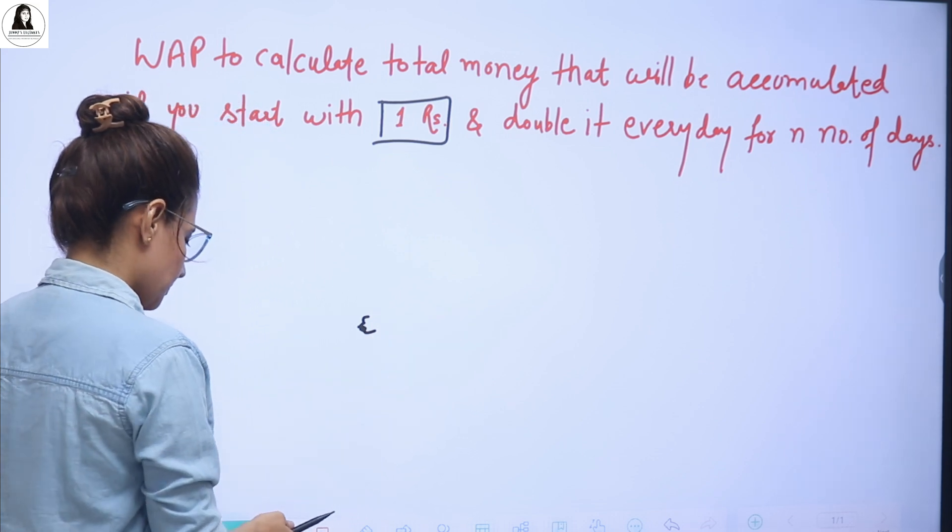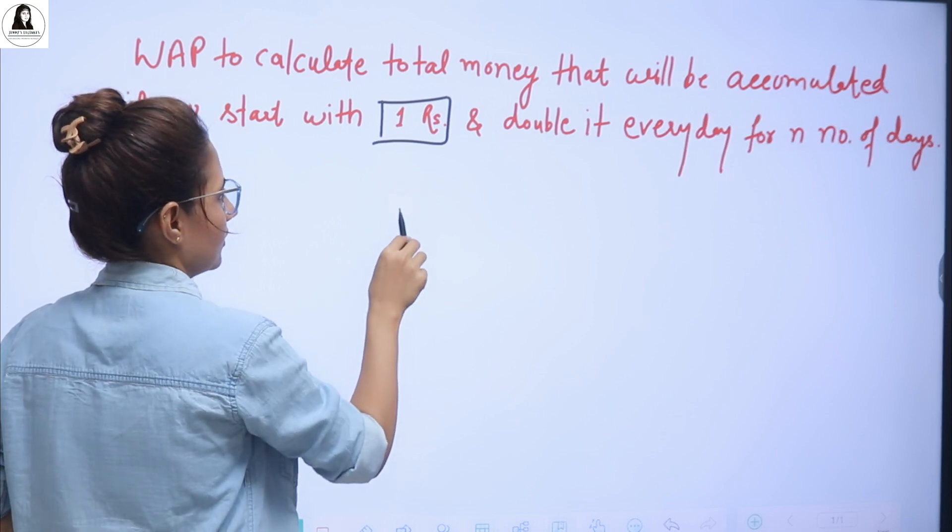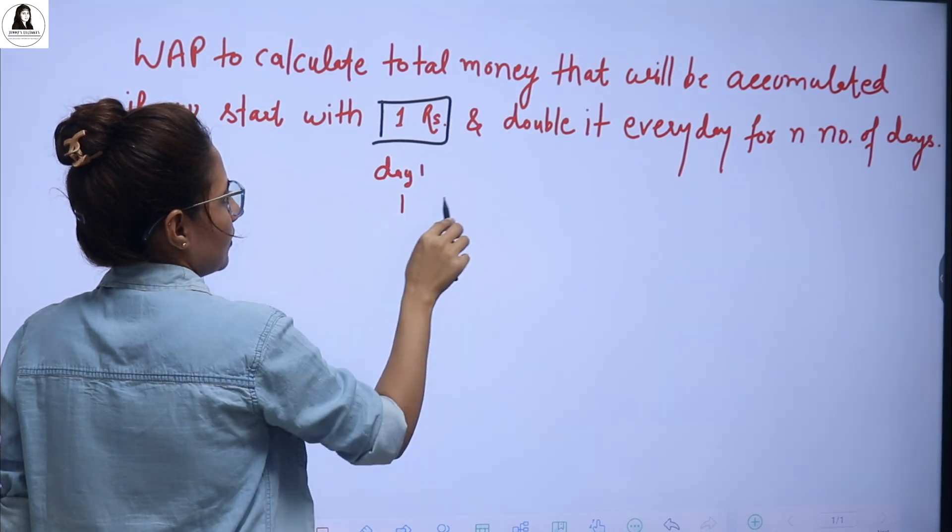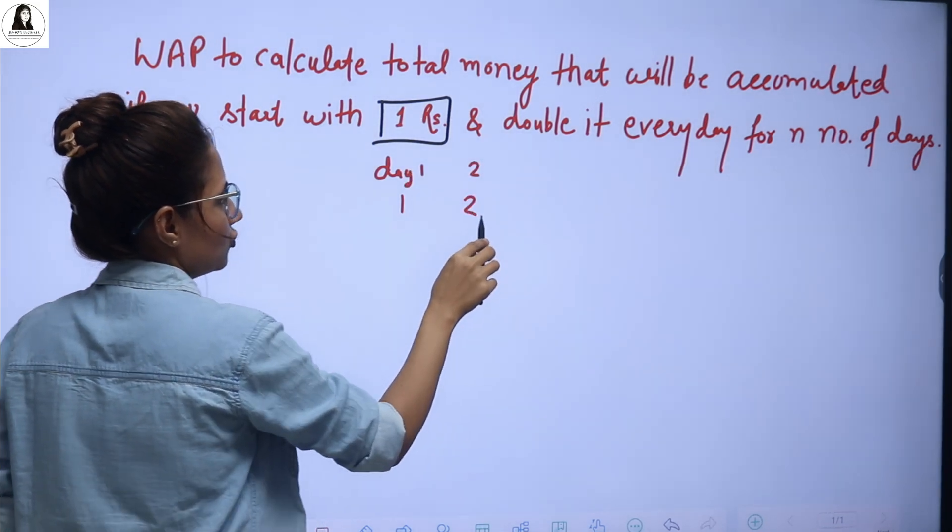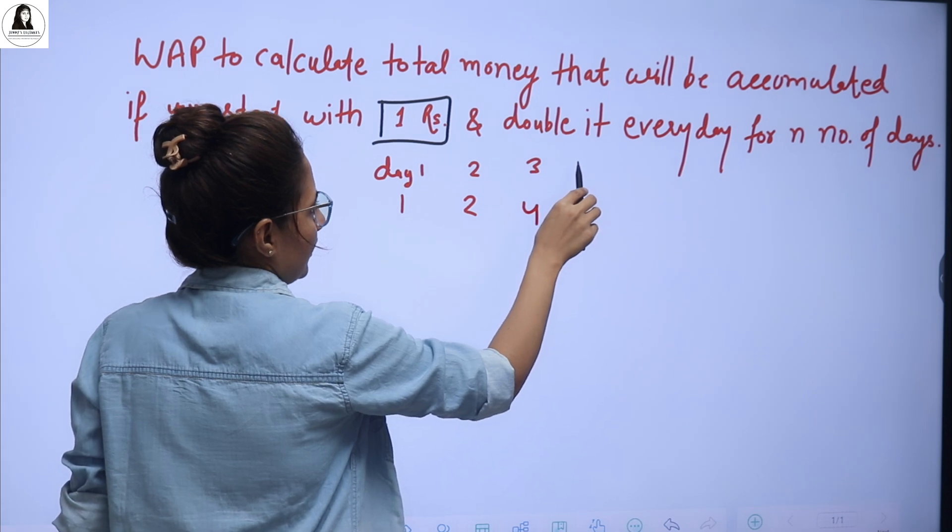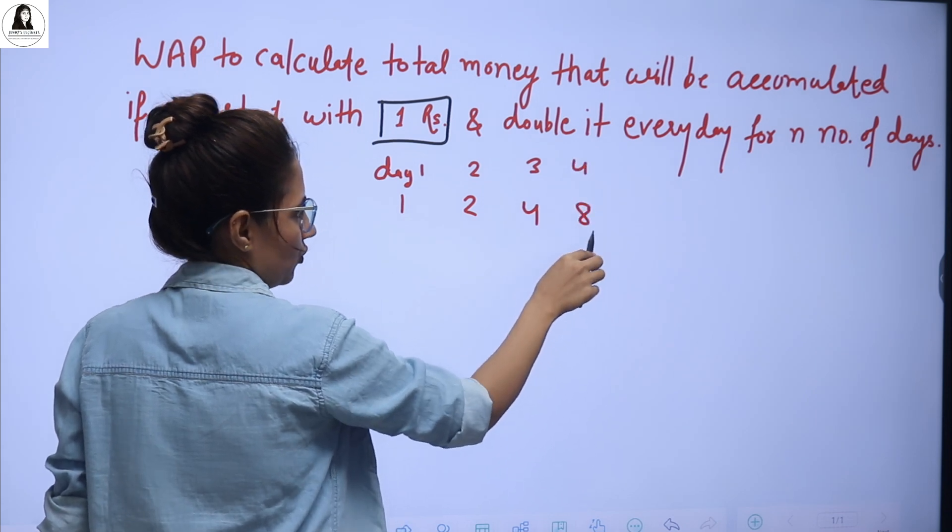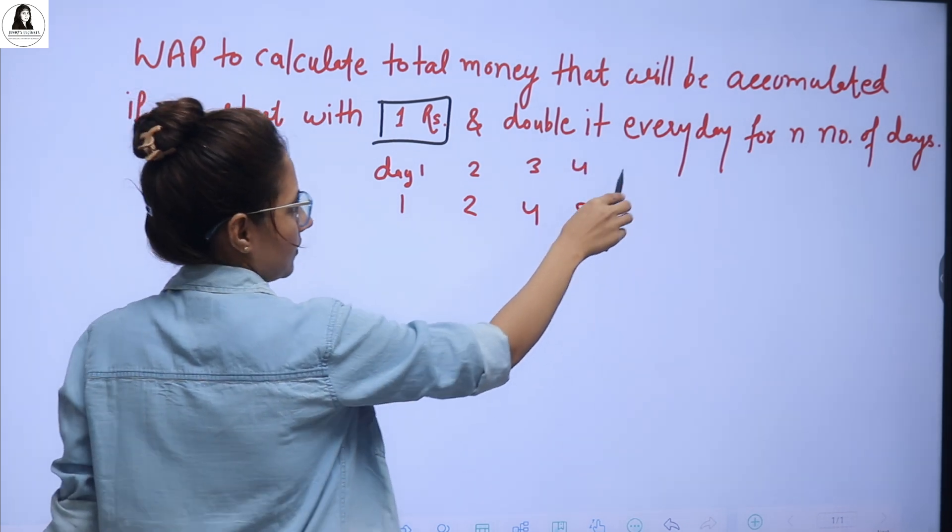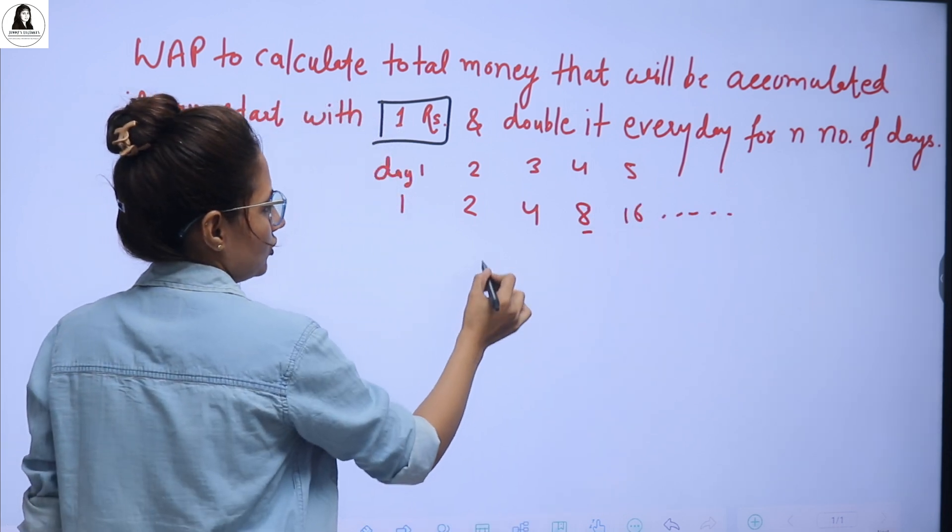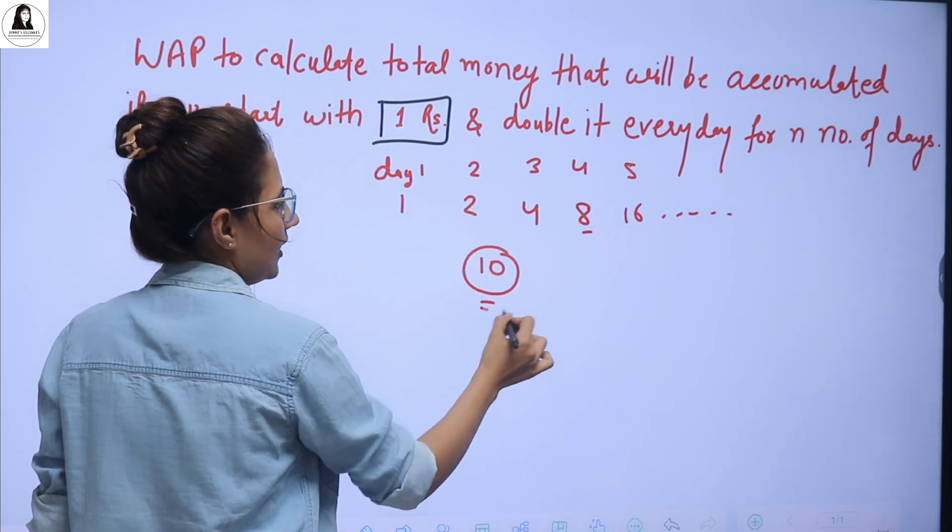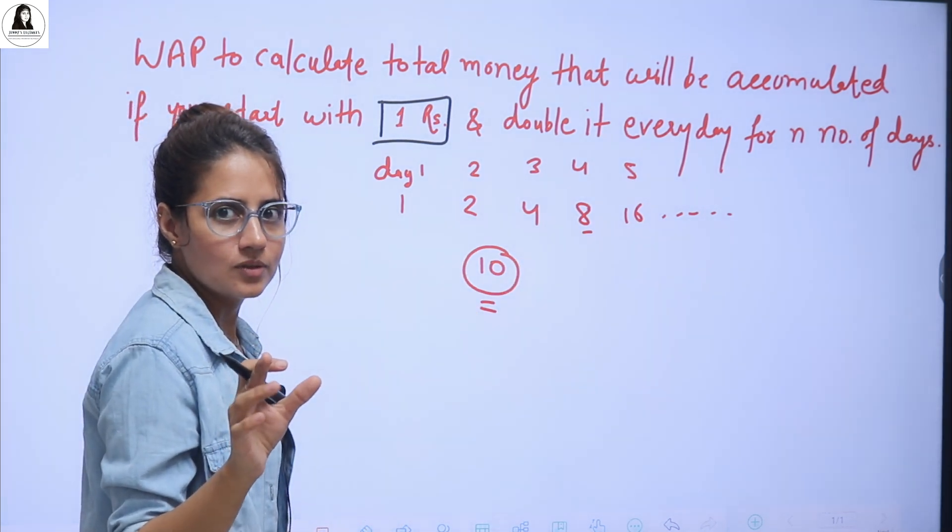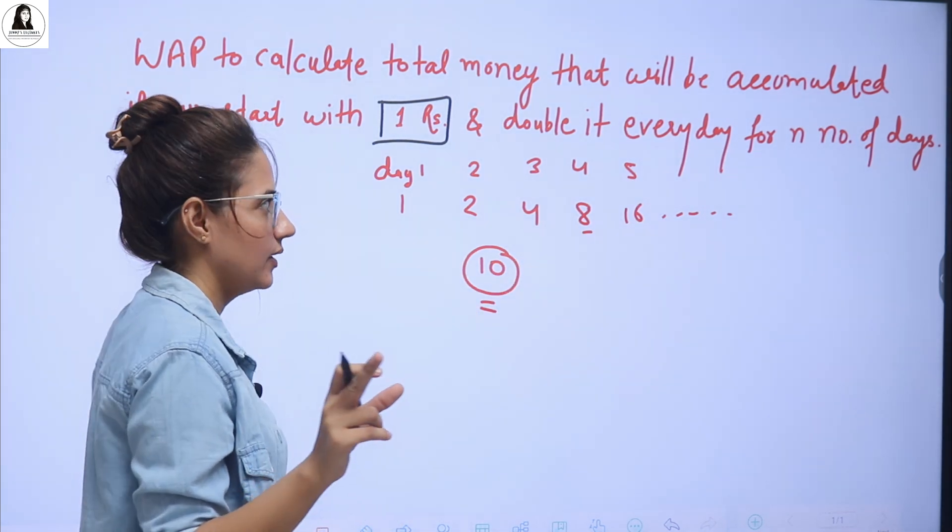Like at day 1, I have 1 rupee, right? Then day 1. Then at day 2, it would be 2. Then at day 3, it would be doubled. That is 4. At day 4, we have number of rupees, the amount is 8. Then 5th, amount is 16. Something like this. And if number of days are 10, so after 10 days, how much money you will have? Or after 30 days, how much money you will have? This you need to calculate, right? Using recursive.